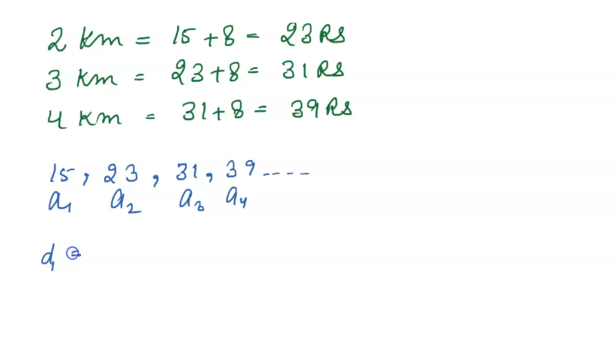So here d1 equals a2 minus a1, which equals 23 minus 15 equals 8. When we find d2, it is a3 minus a2, which equals 31 minus 23 equals 8. So you can see that the difference is same.